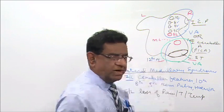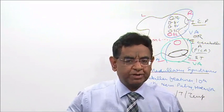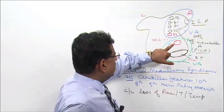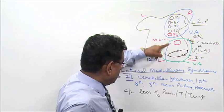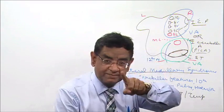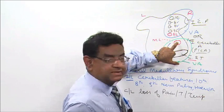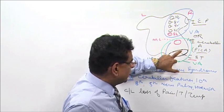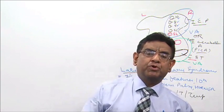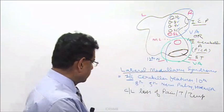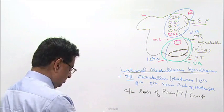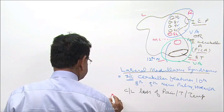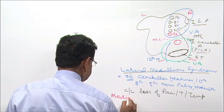The structures involved are the right-sided medial lemniscus, right-sided corticospinal tract, and right-sided twelfth nerve. Clinically: right-sided twelfth nerve palsy, contralateral loss of position and vibration sense, and contralateral upper motor neuron features. This is known as medial medullary syndrome.